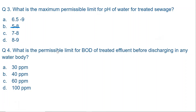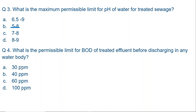Question four: What is the permissible limit of BOD of treated effluent before discharging into any water body? The options are 30, 40, 60, or 100. The correct answer is 30 mg per litre. The BOD of treated effluent being discharged into any water body should never be more than 30 ppm or 30 mg per litre. Please remember: in the case of water, PPM equals mg per litre.